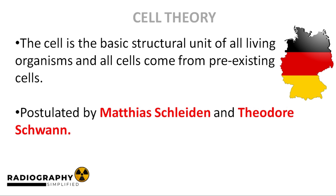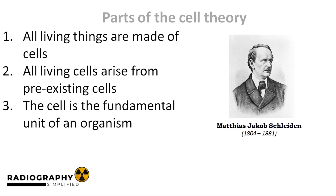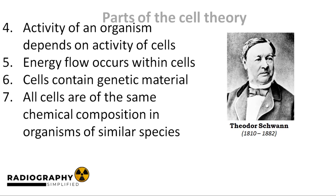Let's dive into the concepts of the cell theory. The first postulate states that all living things are made of cells. Next, it states that all cells are produced from pre-existing cells, referring to processes such as mitosis and meiosis. In number three, the cell is referred to as the fundamental unit of an organism. Postulate number four states that the activity of an organism depends on the activity of its cells — meaning any process the body is going through is happening because of a group of cells facilitating that process.